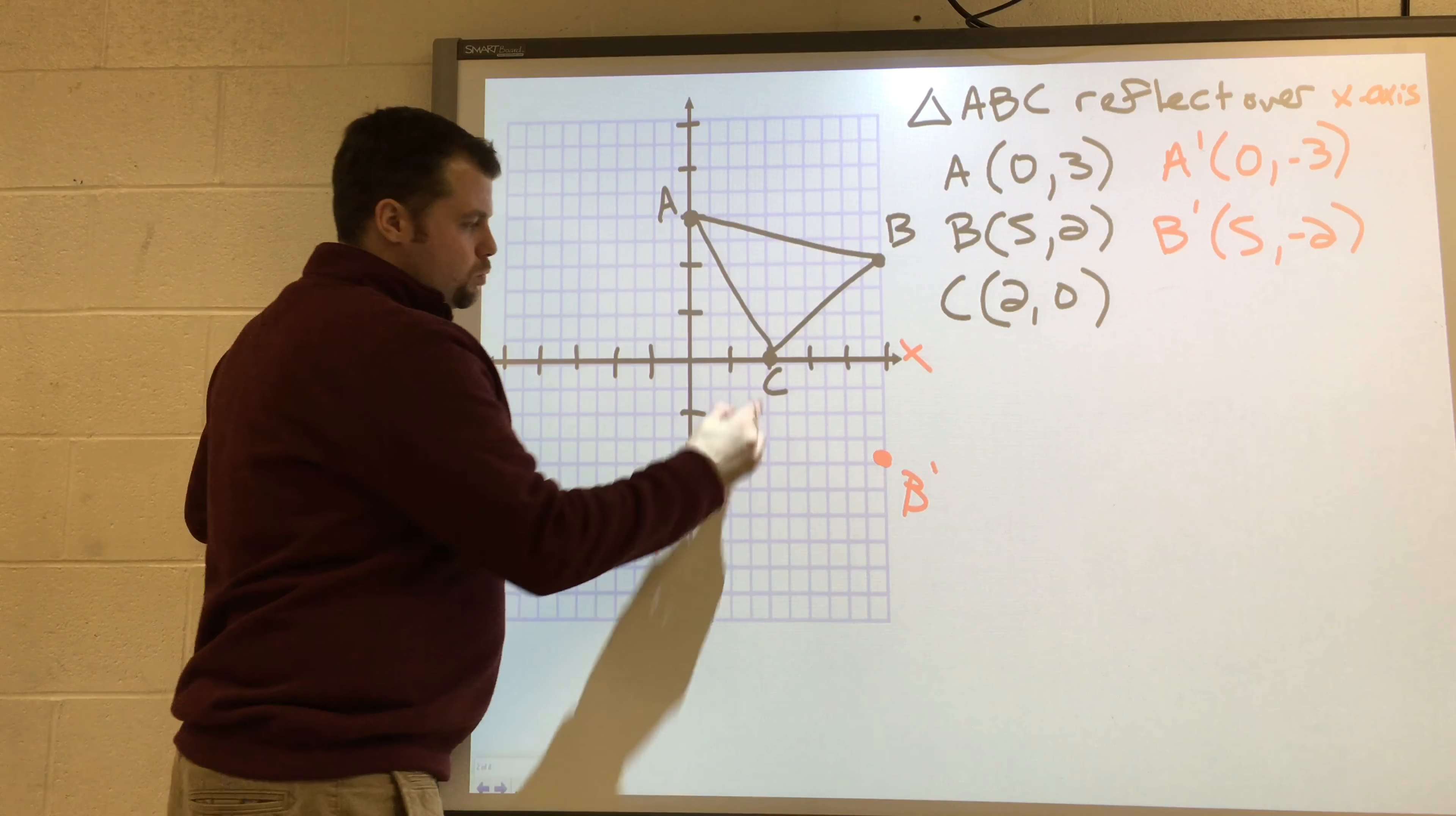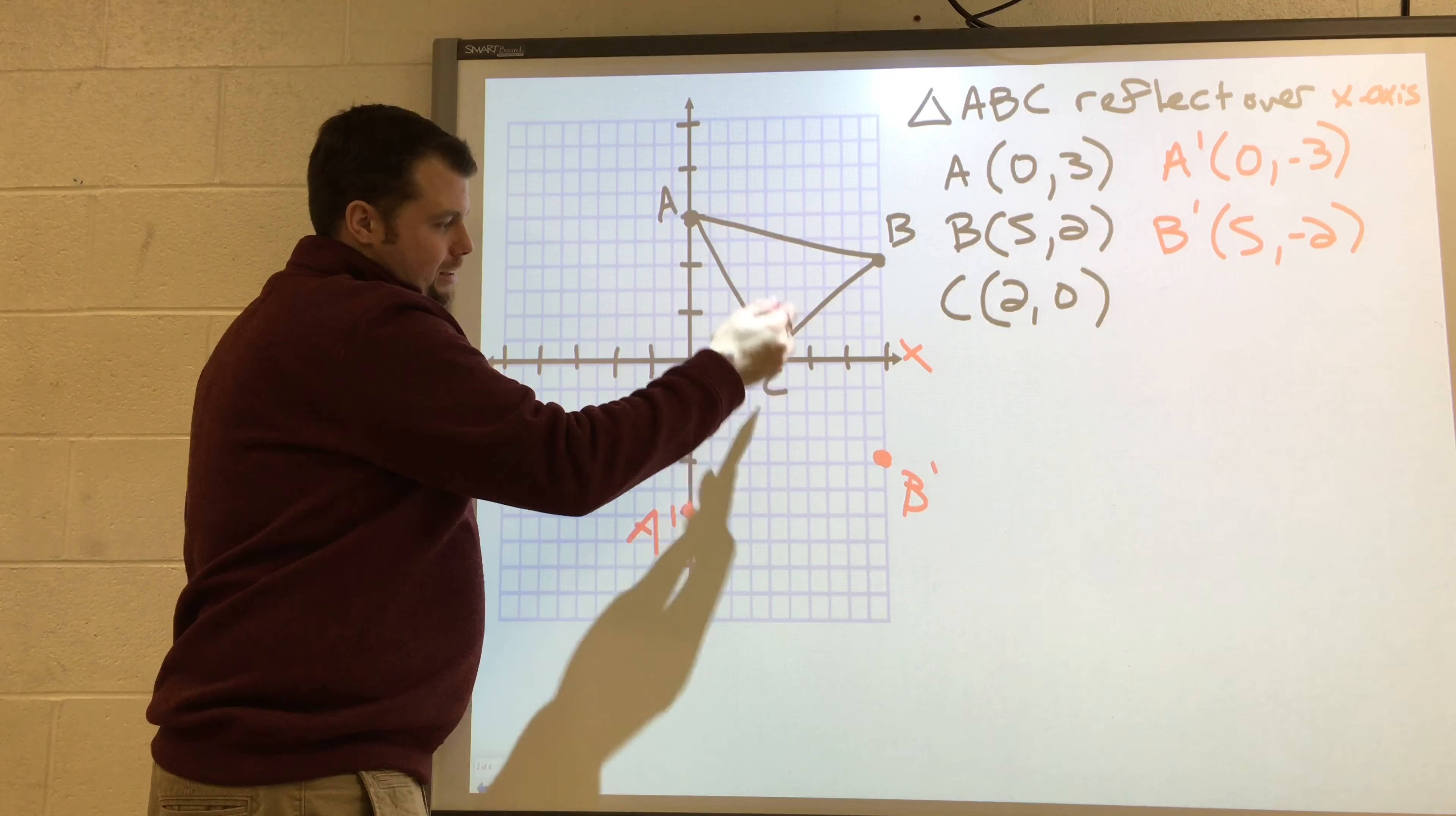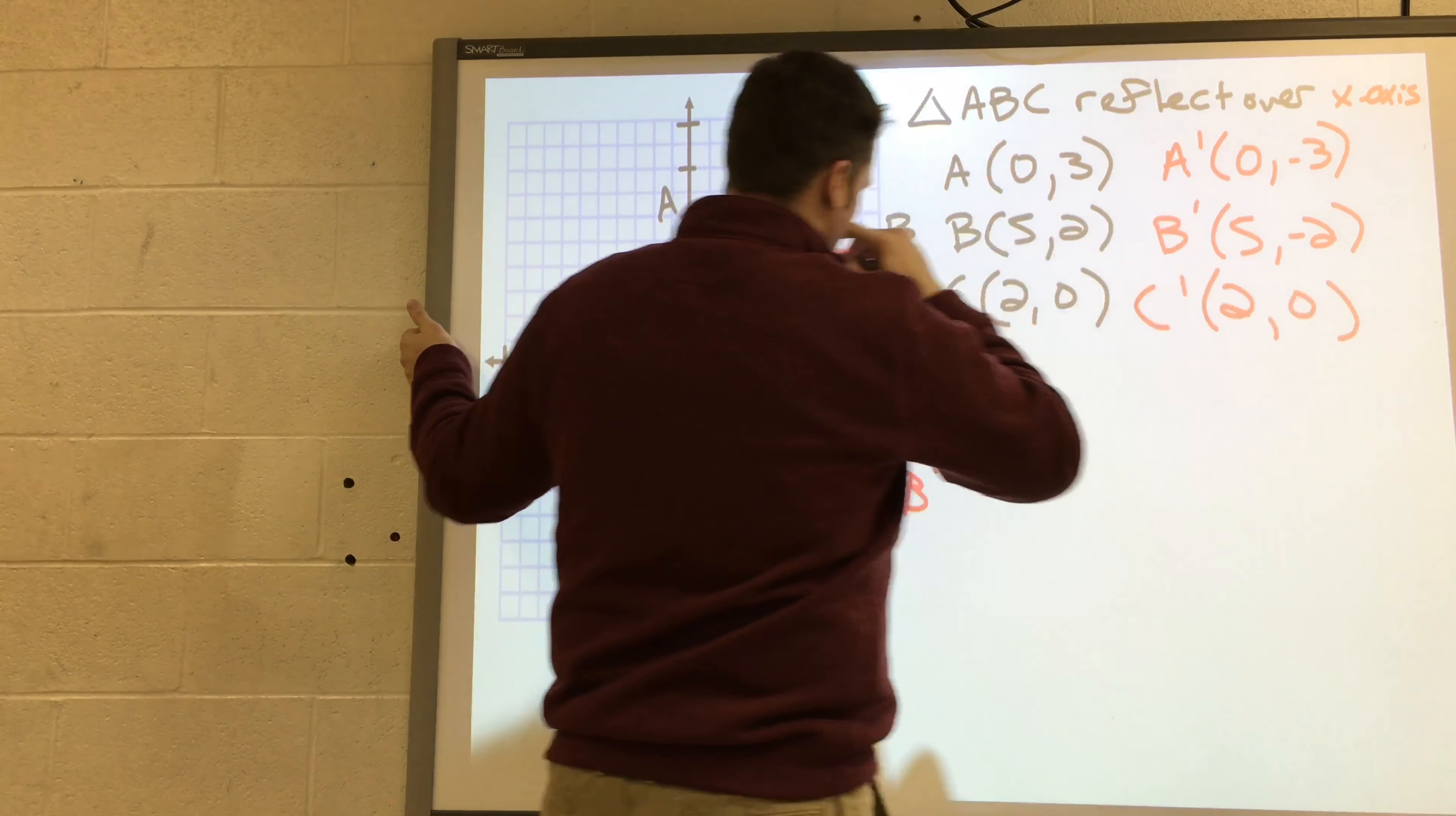And then finally, C is right here on the x-axis. Well, it's not going to move off the x-axis. It's going to stay right there. And that's going to be our C prime, and it's going to be the same point, two, zero.